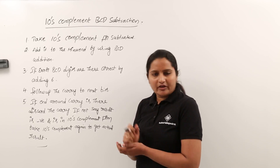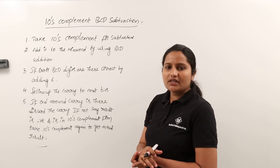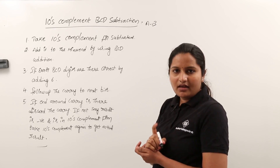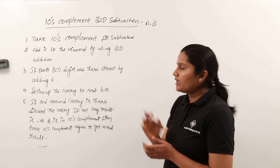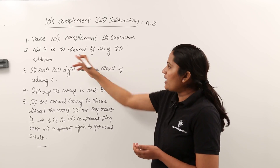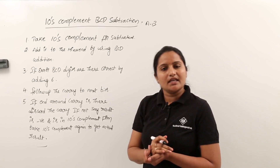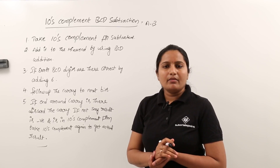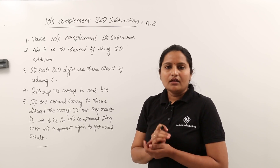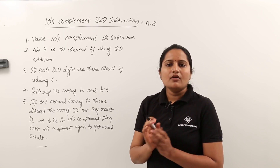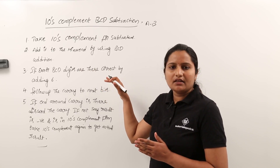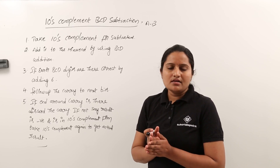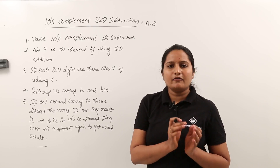The basic steps in ten's complement subtraction: first, take ten's complement of the subtrahend. For example in A minus B, B is the subtrahend and A is the minuend. After that, add the ten's complement of the subtrahend to the minuend using BCD addition. Third, if there are error BCD digits, correct them by adding 6 — but only to the error bits, not to correct bits.